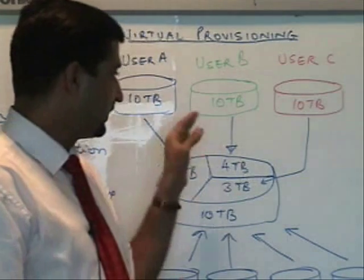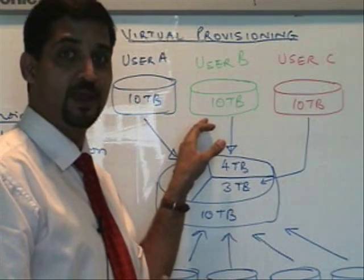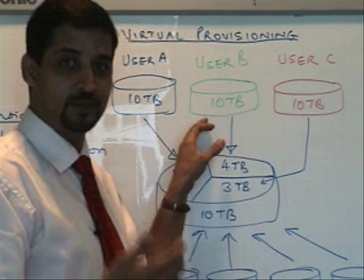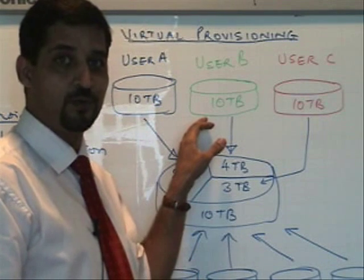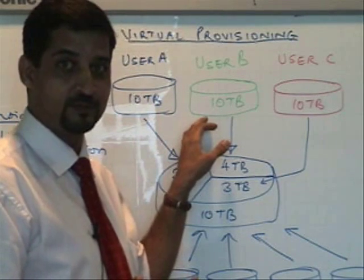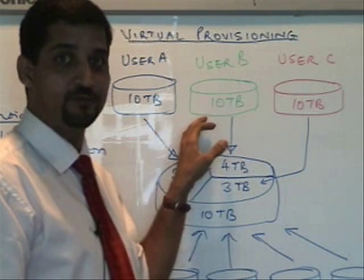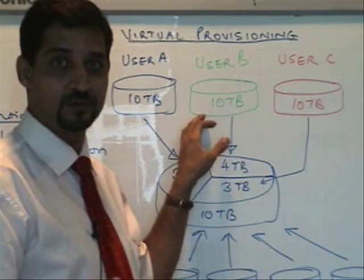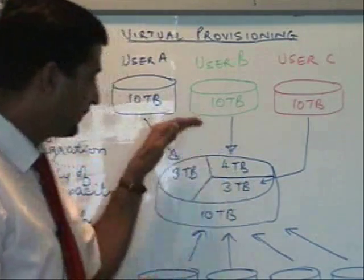Point number three: the 10 terabytes of growth anticipated at end of year is purely based on calculations. What if the calculations go wrong and the user ends up using only 5 terabytes? You still have a situation where, after provisioning for all of it, you still have wasted capacity. How can we overcome that particular problem?